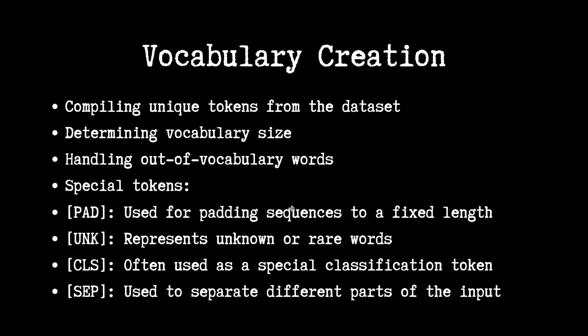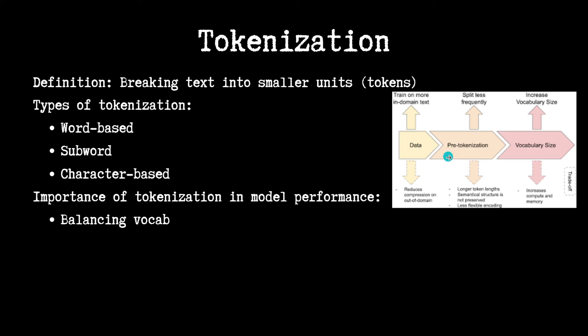Handling out-of-vocabulary words requires special tokens. The padding token is used to pad sequences to a fixed length, since LLMs can only be trained with a fixed length across a batch. The UNK token represents unknown and rare words. The CLS token is a special classification token that holds overall information about the whole sequence. The SEP token is used to separate different parts of the input, such as separating paragraphs.